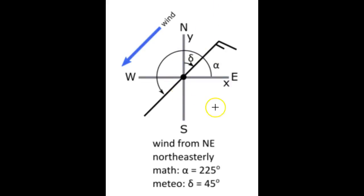The math angle is measured counterclockwise from the x or east axis. Zero, ninety, one hundred and eighty, two hundred and seventy, three hundred and sixty or zero.